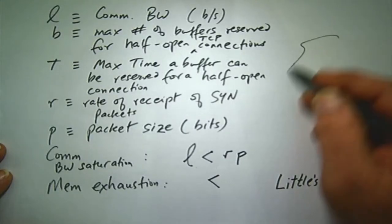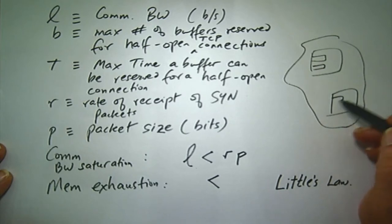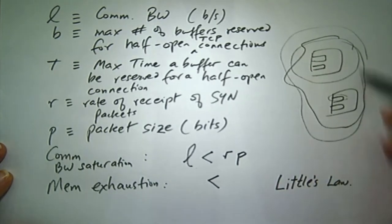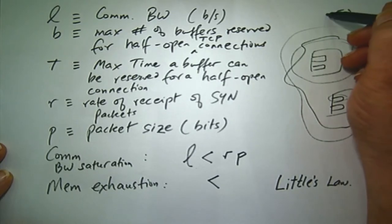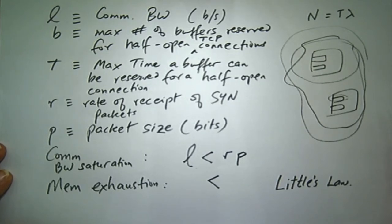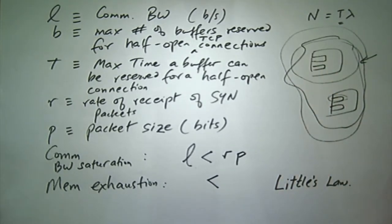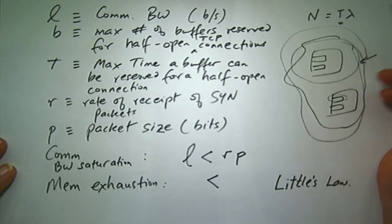You've got a communication network with various switches and routers, each with different buffers. You can throw a boundary anywhere you want — around a switch, around a single buffer, around the entire subnet. Little's Law states that the average time a packet spends inside the boundary, multiplied by the aggregate arrival rate, equals the average number of packets in the system. The remarkable thing is that this doesn't depend on the statistics of the arrival rate — arrivals don't have to be Poisson. It can be anything and this relationship still holds.